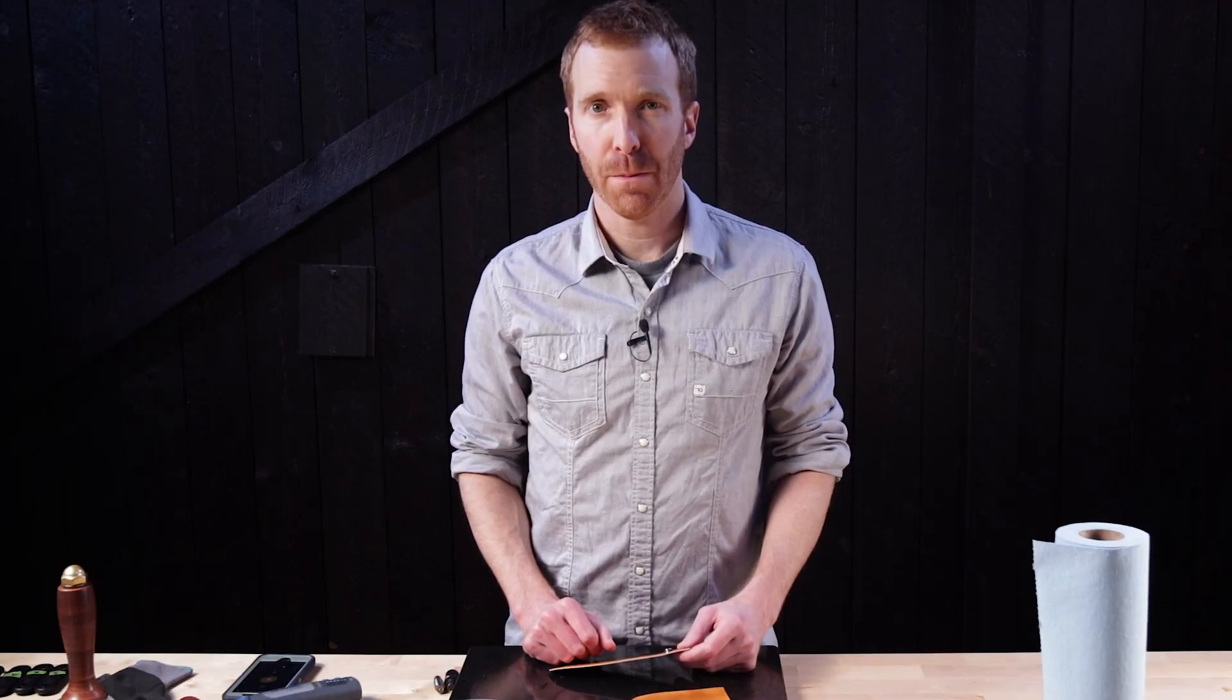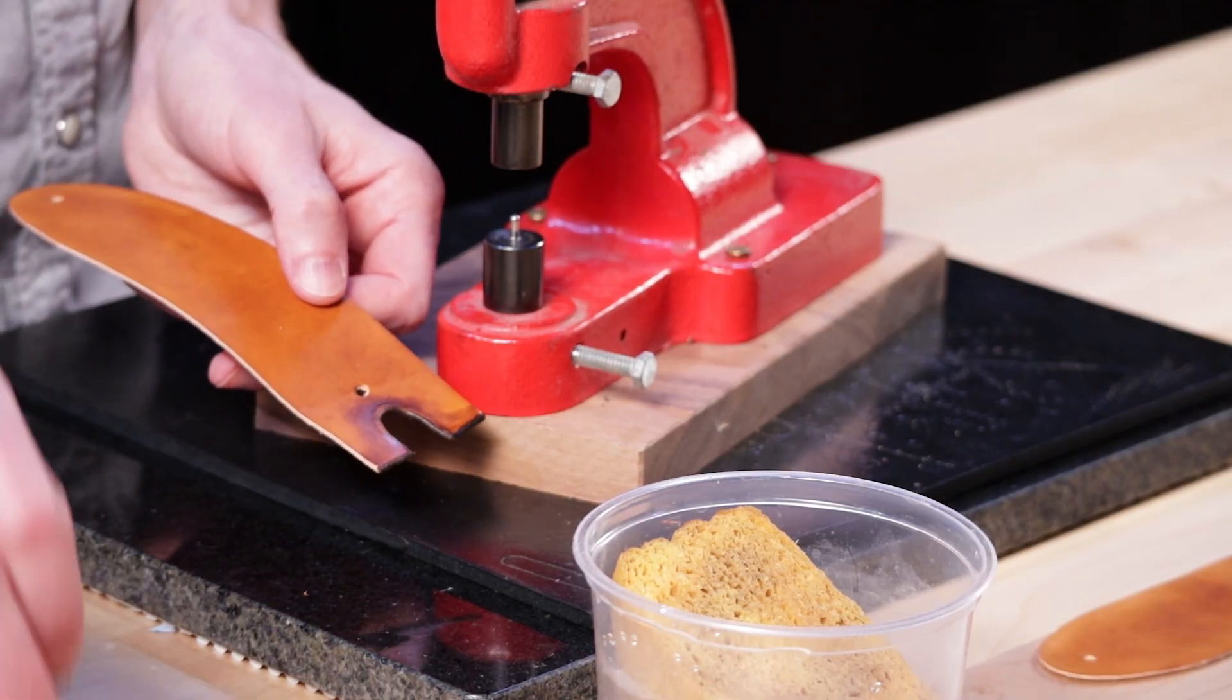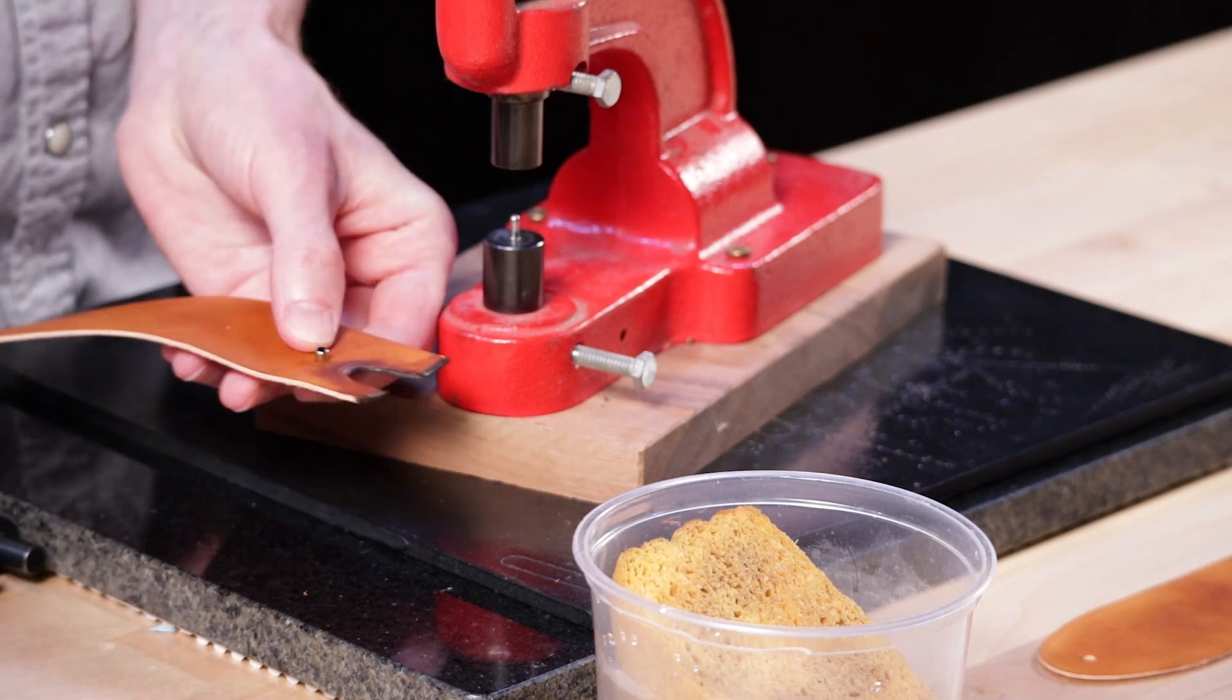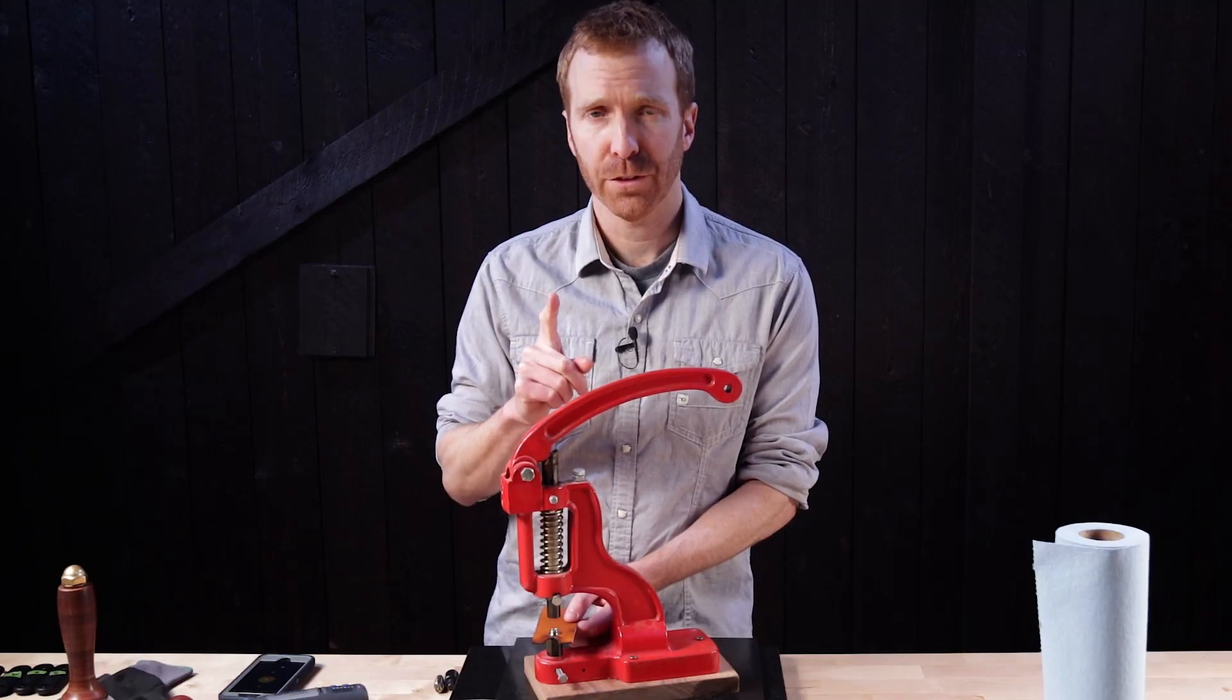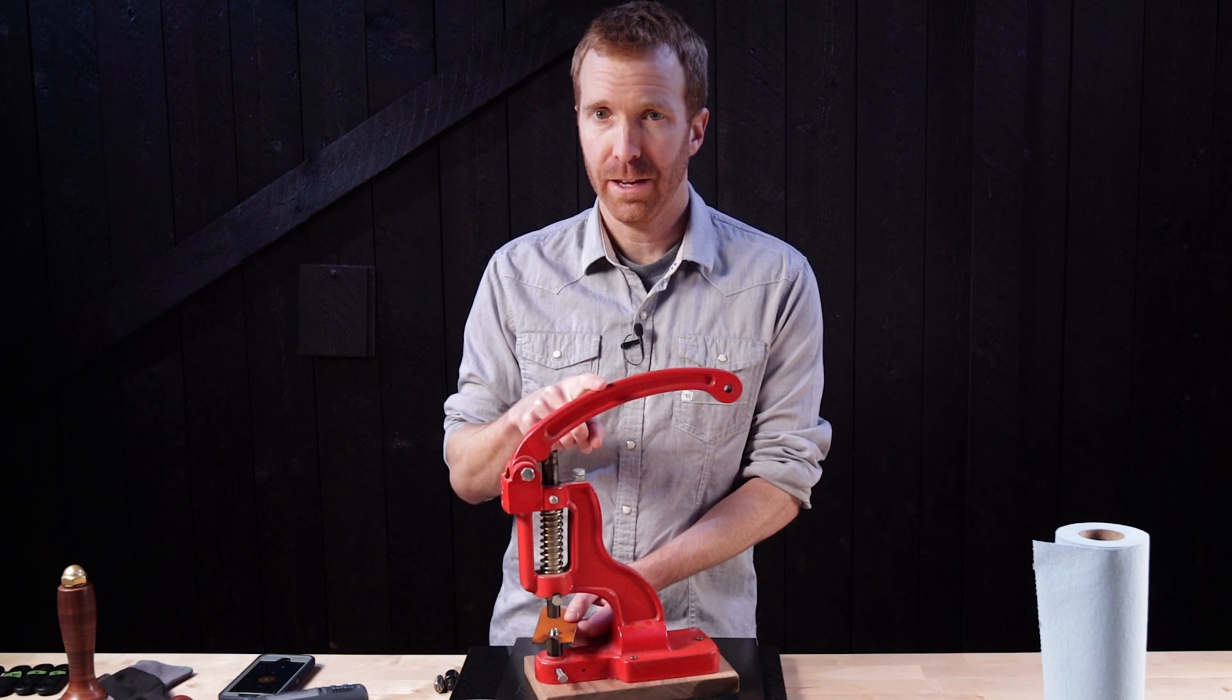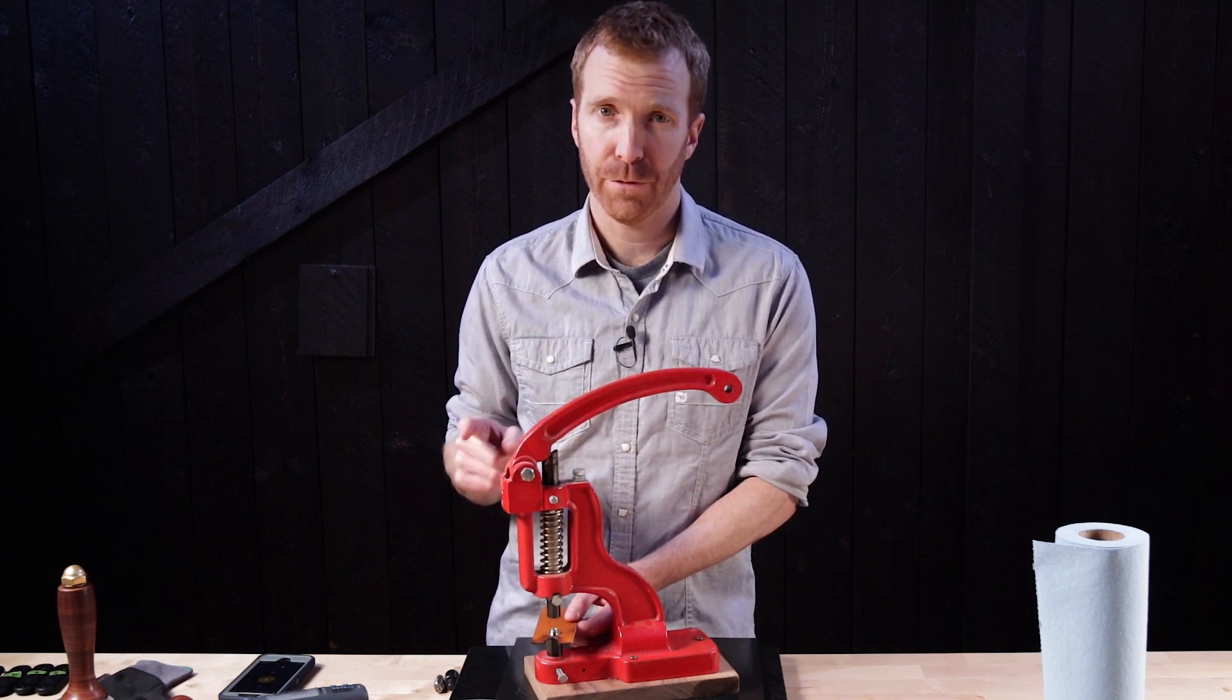At this point I'm going to install the male snap piece. It's a line 24 snap and I'm going to take this piece, put the backing in, put the top stud in. If you're going to be doing this for a long time I highly recommend getting at least a hand press and even better is a foot press as you can apply even more pressure with a foot press.